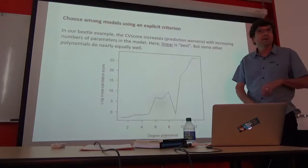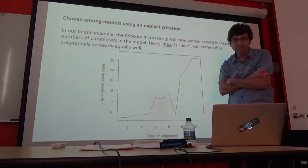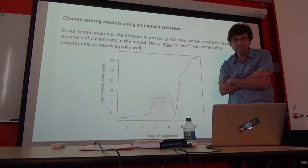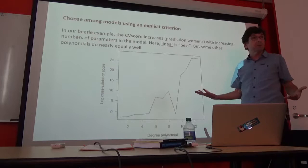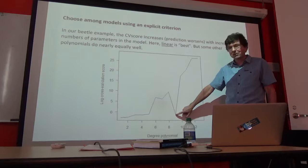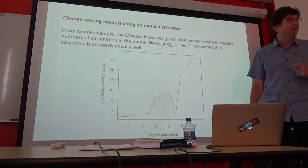If I plot the log of the cross-validation score against the degree of the polynomial, what do I find? It's minimized for the linear regression. So the model that actually predicts best is the intuitive one — the one we would probably have begun with — the linear regression. But I also want to point out that some of the other models actually do nearly equally well. There's still the question of which of these models remain under consideration and which can be excluded outright. And surprisingly, a ninth-degree polynomial did nearly as well as a straight line at predicting each data point one at a time.